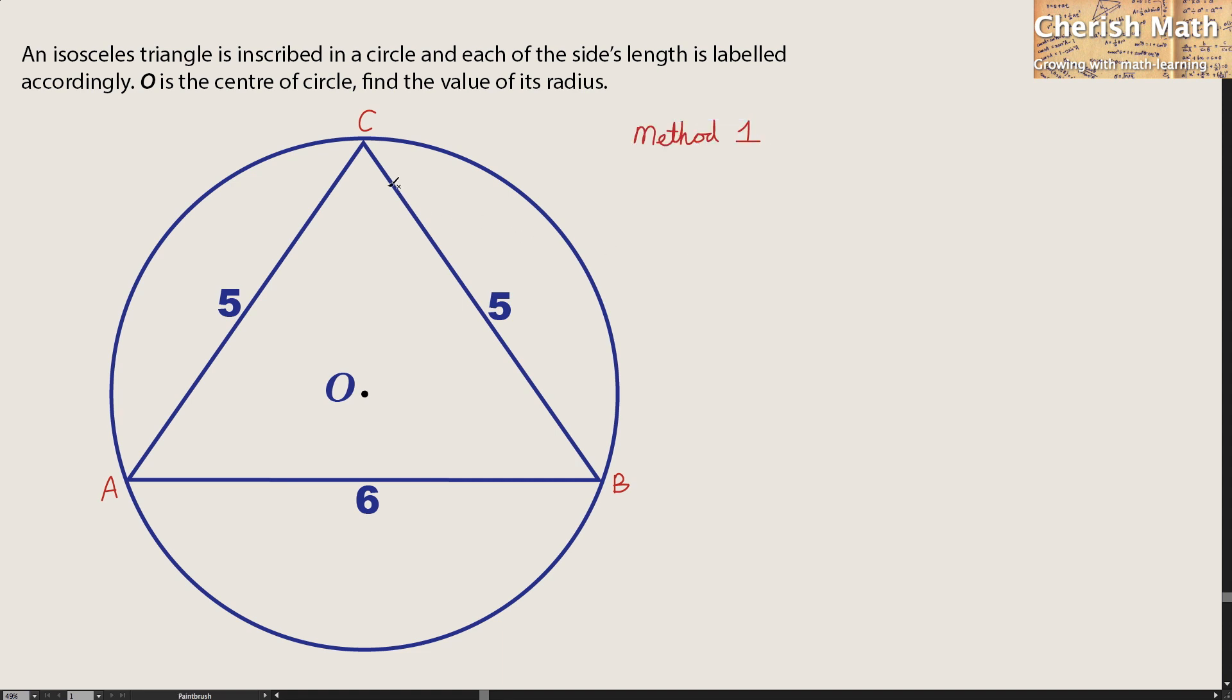let's begin with finding the angle theta. To find this angle theta, I'm going to use the cosine rule, which is 6 squared equal 5 squared plus 5 squared minus 2 times 5 times 5 times cos theta.